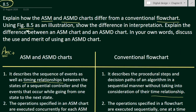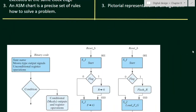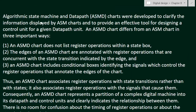In the third part of the problem we are asked to explain the difference between the ASM chart and the ASMD chart. ASM stands for Algorithmic State Machine, and ASMD stands for Algorithmic State Machine with Data path. ASMD charts were developed to clarify the information displayed by ASM charts and to provide an effective tool for designing a control unit for a given data path unit.